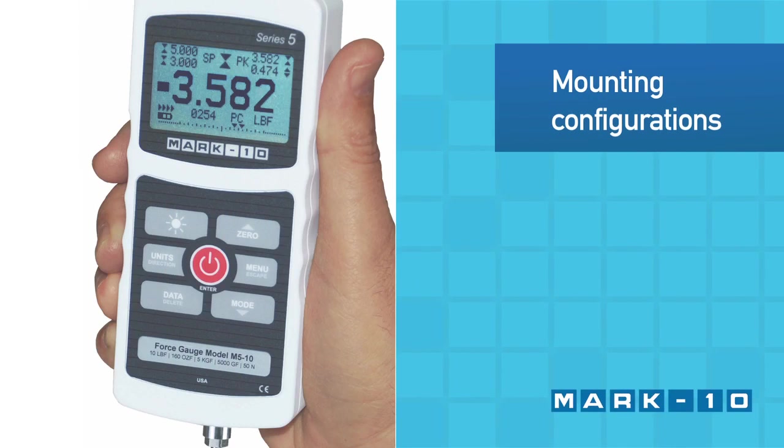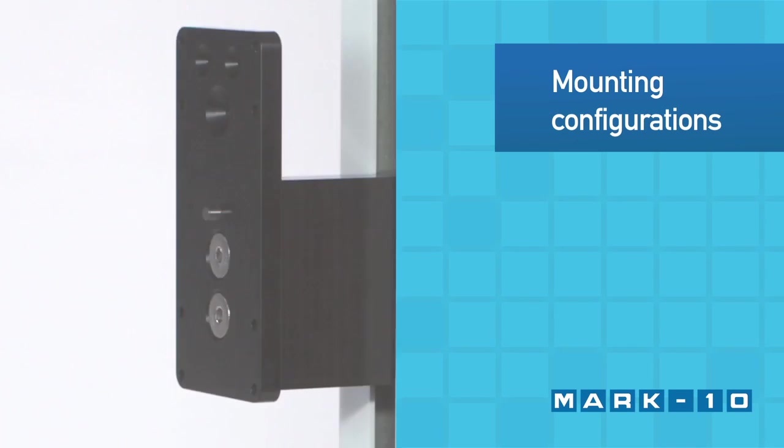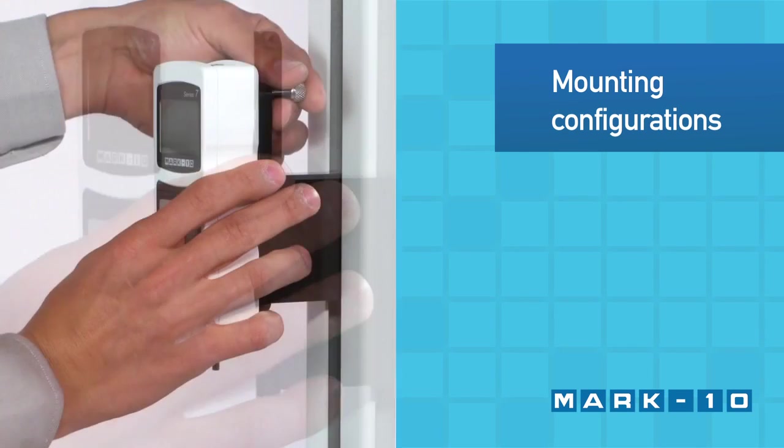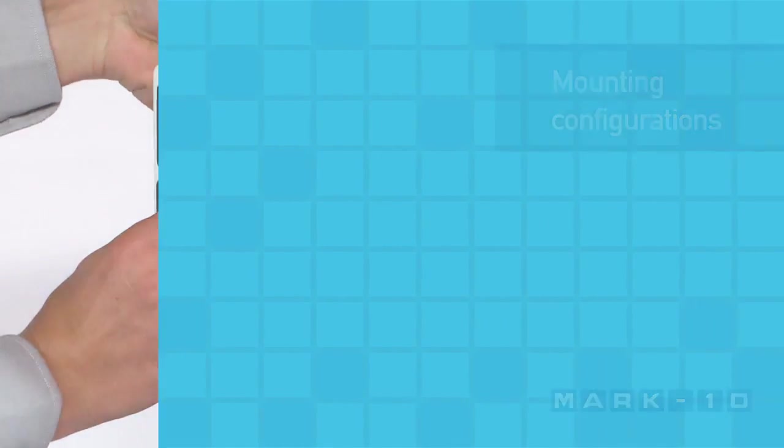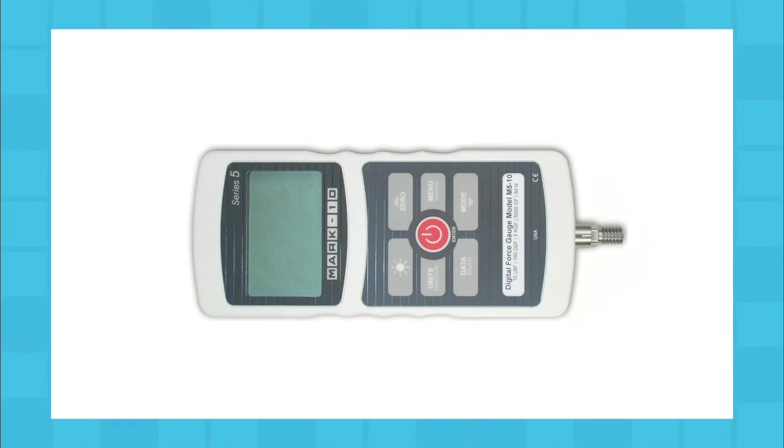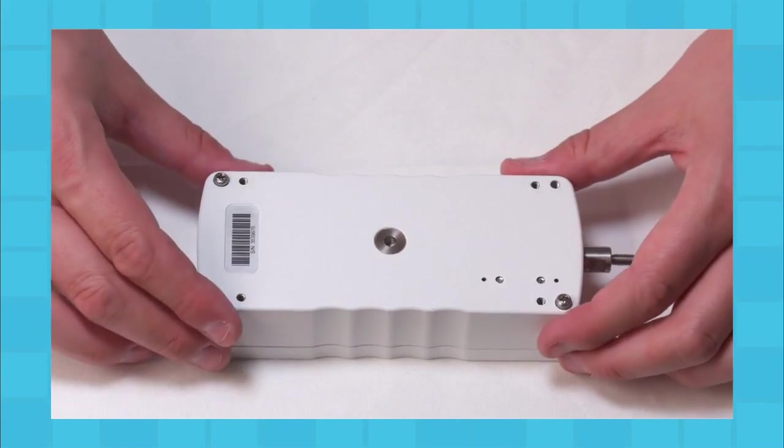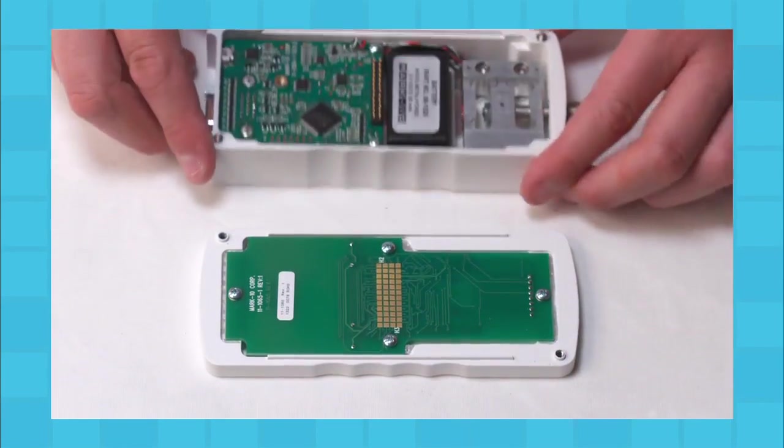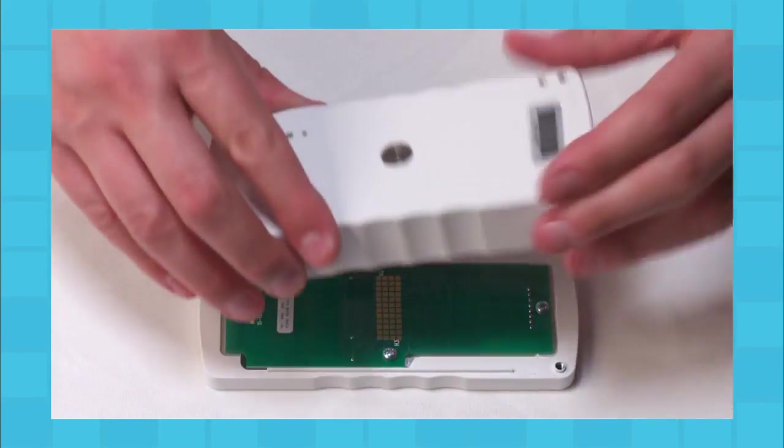Use the Force Gauge handheld or mount to a test stand for more controlled testing. Match the hole in the rear of the housing with the dowel pin located on the test stand's mounting plate. To accommodate handheld or test stand mounting, the orientation of the load cell shaft may be flipped while the keypad and display remain upright. To reverse the orientation, separate the two halves of the housing, reverse, and reassemble.